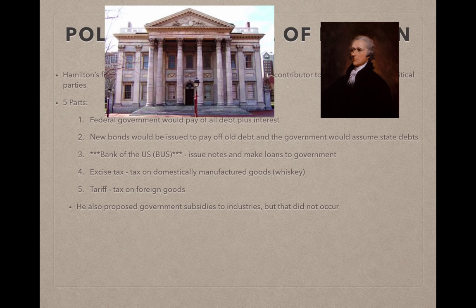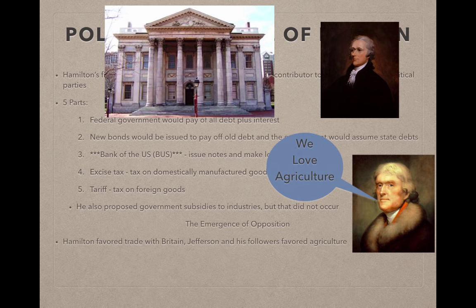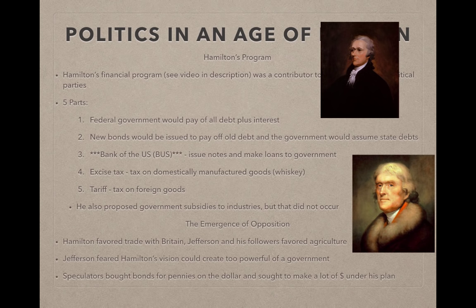Hamilton also proposed government subsidies — giving money or tax breaks to industries — but that part did not occur. Hamilton favored trade with Britain, seeing the economy prospering that way, while Jefferson and his followers favored agriculture. Jefferson feared Hamilton's vision could create too powerful a government, too similar to the one they had just overthrown from Great Britain.